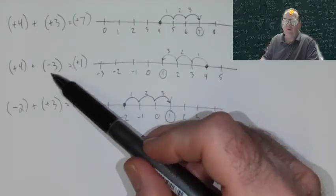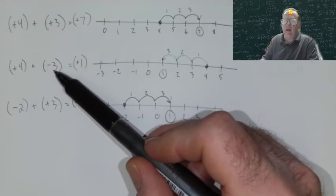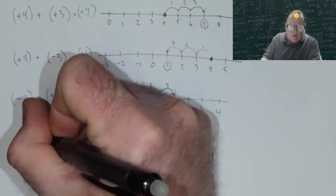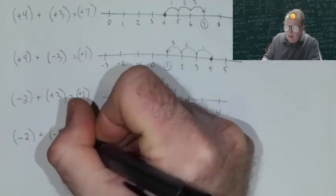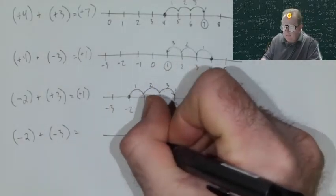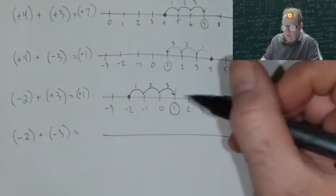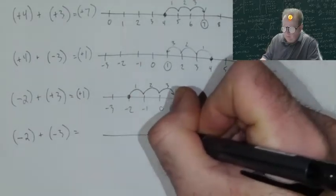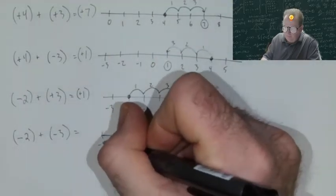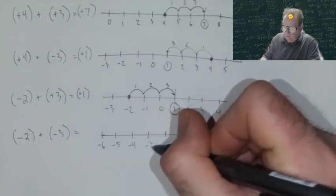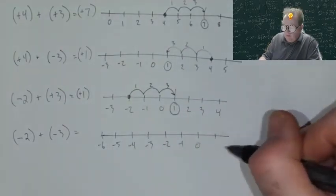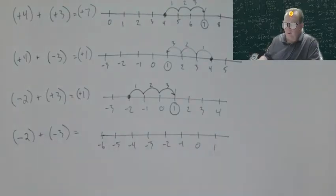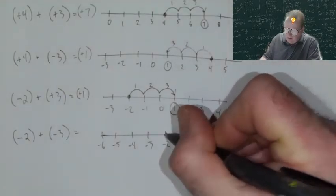Likewise, if we're adding a negative and we start negative, it doesn't really change much either. We can start with negative 2 and add negative 3. Let's see what that gets us. Here's our number line. First digit, negative 2. So that's my starting point. So I go to my number line, find negative 2, mark that as my starting point.